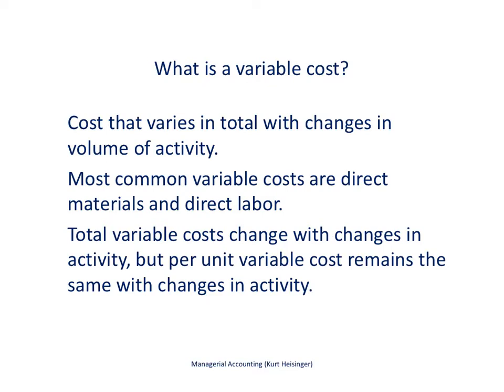Variable costs vary in total — that's the important part, in total — with changes in volume of activity. So the total cost overall, usually for a period of time, varies depending on the volume of production. The most common variable costs are direct materials and direct labor. Direct materials are materials easily traced to the product, and direct labor is the labor easily traced to the product.